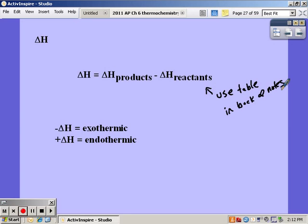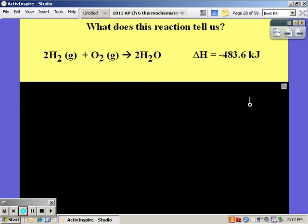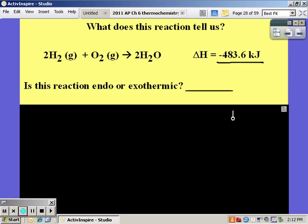If it's negative, it's exo. Positive, endo. Another thing that we can use delta H for is when given a reaction and its delta H, we can determine if it's endo or exothermic. Because delta H is negative, the reaction must be exothermic.